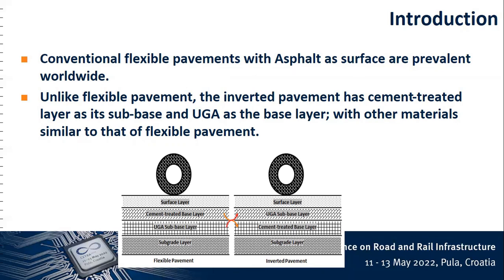In the inverted pavement, the cement treated layer is positioned as a sub-base, and the UGA — the unbounded granular aggregate — as the base layer. This is actually against the norm of flexible pavement, where you look at it from the strongest material to the weakest material. But there is a little bit of inversion in this case, which brings about the concept of inverted pavement.